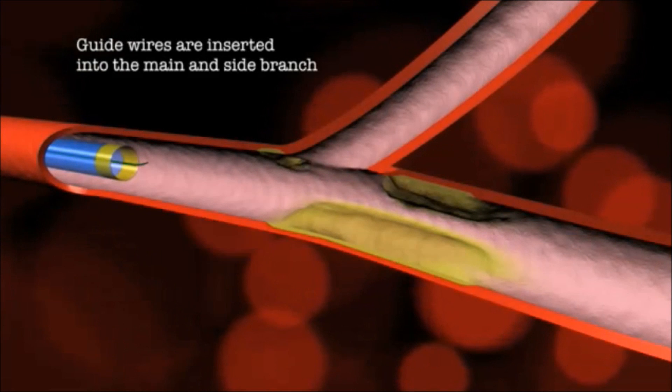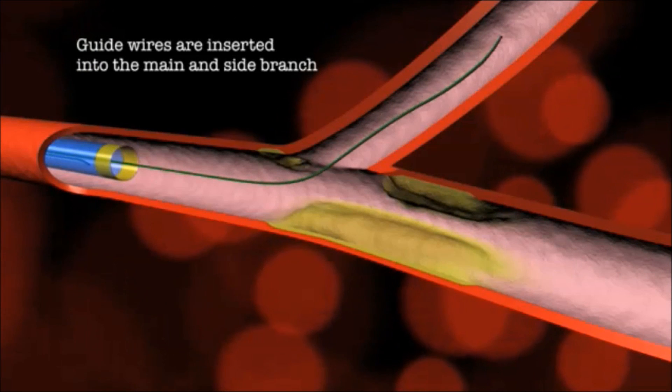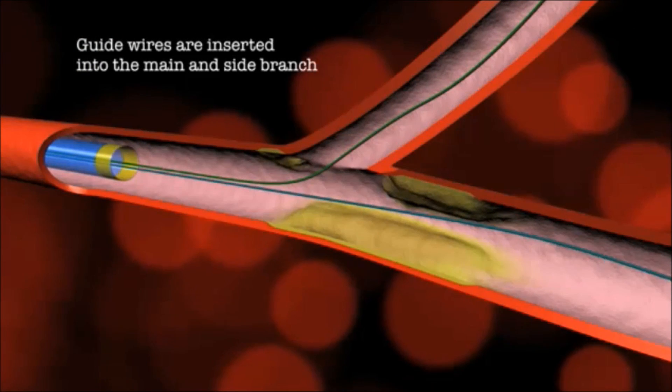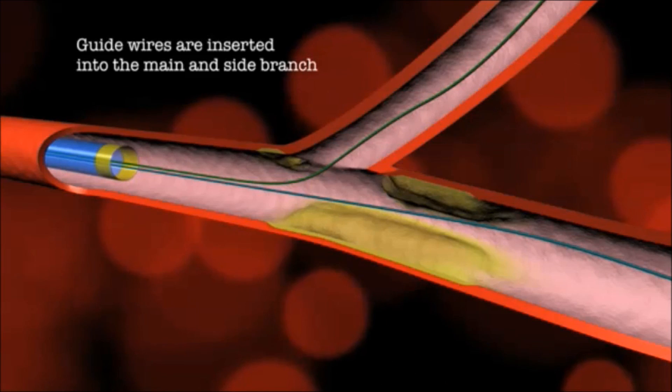The simplicity by which the ABS bifurcation stent is placed is demonstrated in this animation. The device consists of an independently movable dual catheter system.